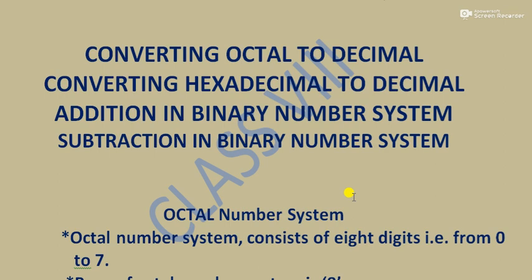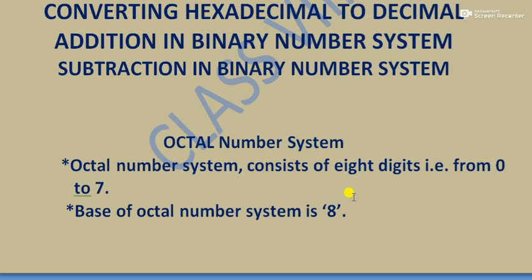The Octal Number System consists of 8 digits from 0 to 7. The base of the Octal Number System is 8, and any digit in this system is always less than 8. The Octal Number System is used as a shorthand representation of long binary numbers.